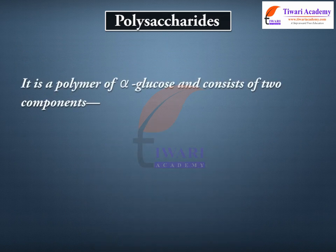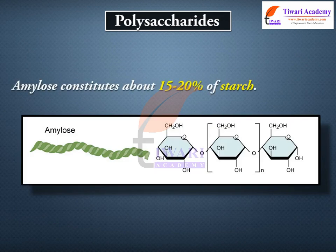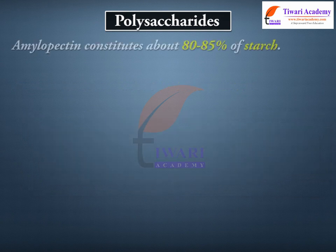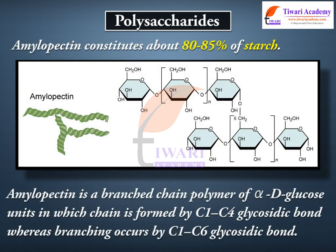Starch is a polymer of alpha-glucose and consists of two components: amylose and amylopectin. Amylose constitutes about 15–20% of starch, while amylopectin constitutes about 80–85%. Amylopectin is a branched-chain polymer of alpha-D glucose units in which the chain is formed by C1–C4 glycosidic bonds, whereas branching occurs by C1–C6 glycosidic bonds.